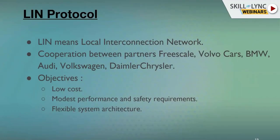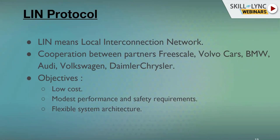The first protocol is LIN — Local Interconnect Network. Local means it operates locally within an ECU. In a car, there are networks local to one ECU, between two ECUs, and between more ECUs. These local networks sit at the end of the network connection. LIN was developed by Freescale, Volvo, BMW, Audi, Volkswagen, and Daimler Chrysler, who came together to develop this protocol.